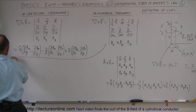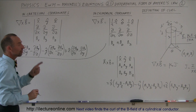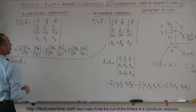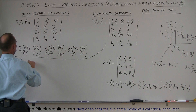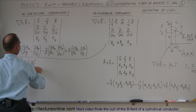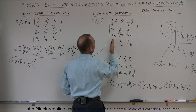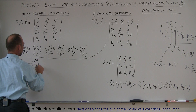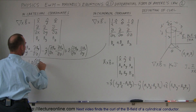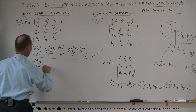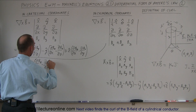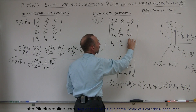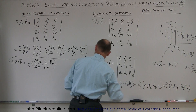Now let's write the curl of B in cylindrical coordinates. The first term is 1 over r times the r unit vector times the quantity: the partial derivative with respect to theta of B sub-z, minus the partial derivative with respect to z of r times B sub-theta.